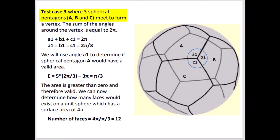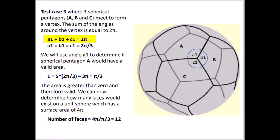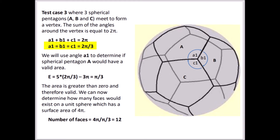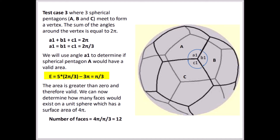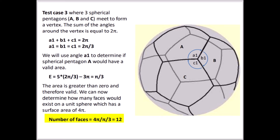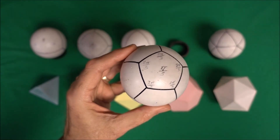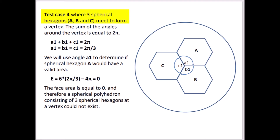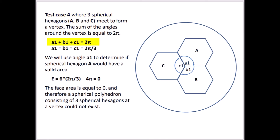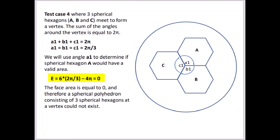For test case 3, three spherical pentagons meet at a vertex where the sum of the angles equals 2π, and the internal angles compute to 2π/3. Computing the area of the spherical pentagon results in an area of π/3 — a valid area. Knowing the sphere's area is 4π, it would require 12 spherical pentagons to partition the sphere. For test case 4, three spherical hexagons meet at a vertex with angles summing to 2π, and the internal angle computes to 2π/3. However, the computed area of the spherical hexagon results in zero, indicating this is not a valid spherical polyhedron.